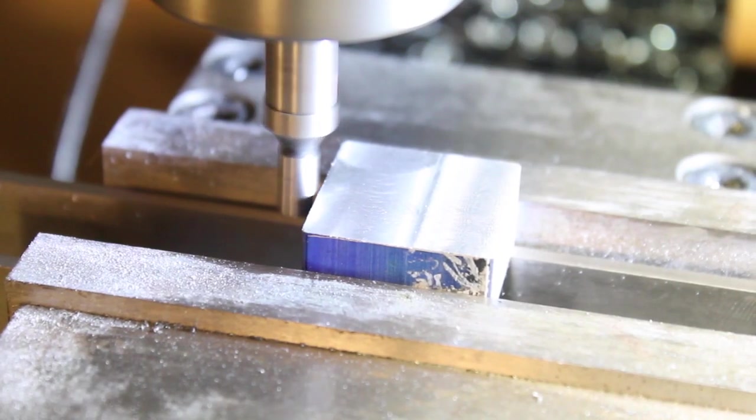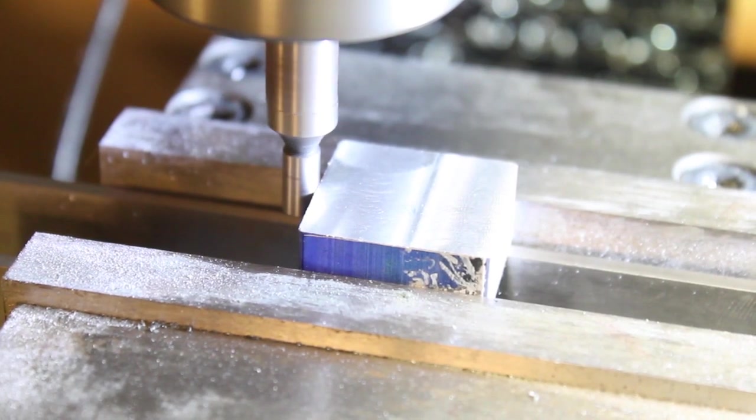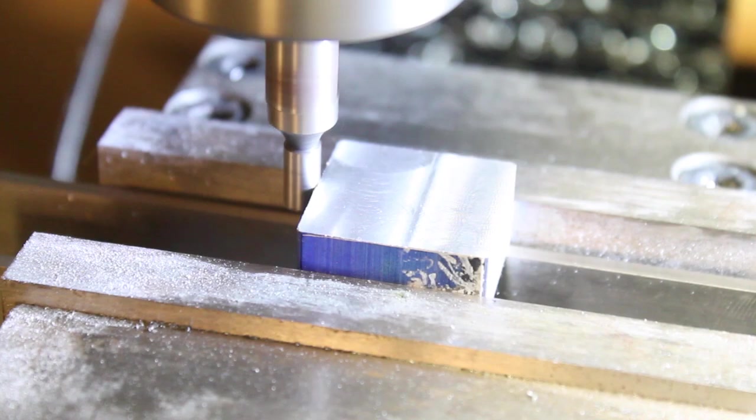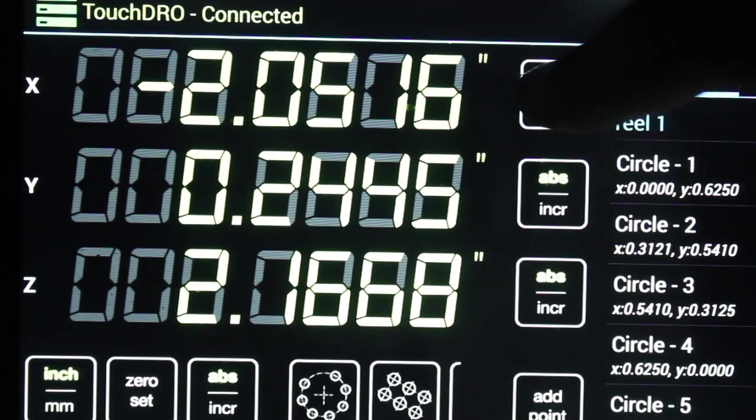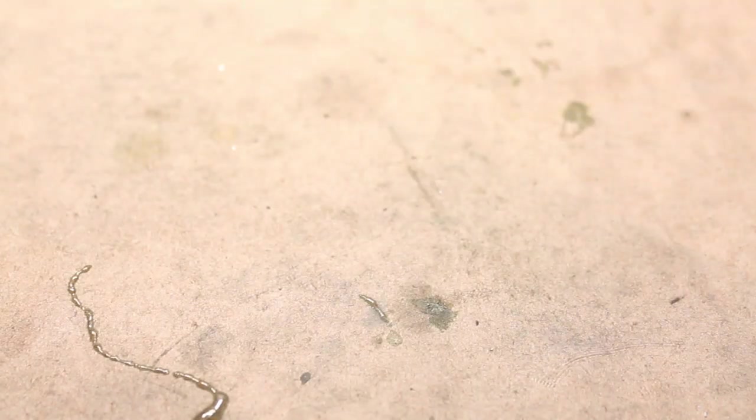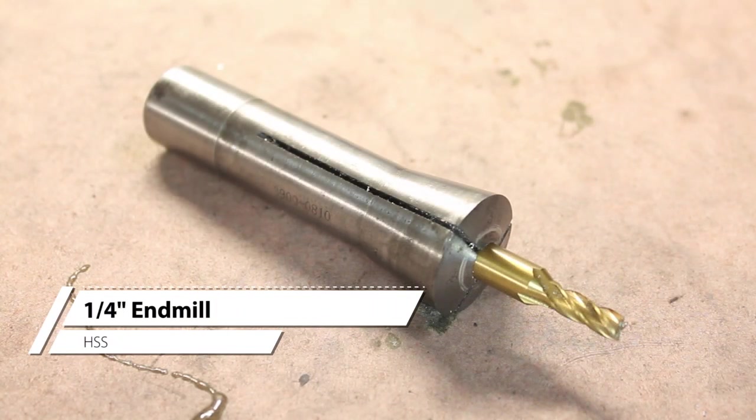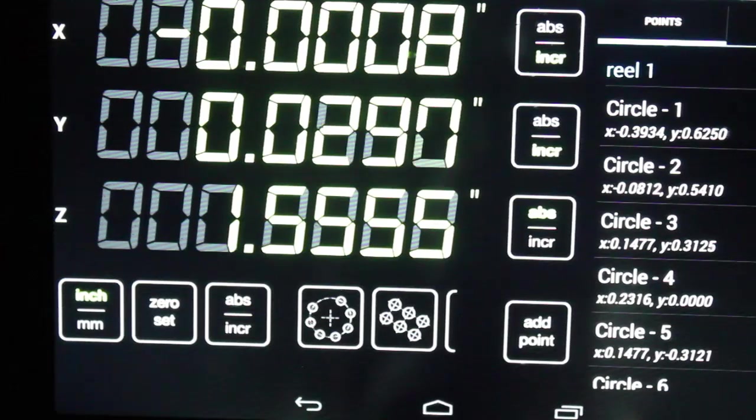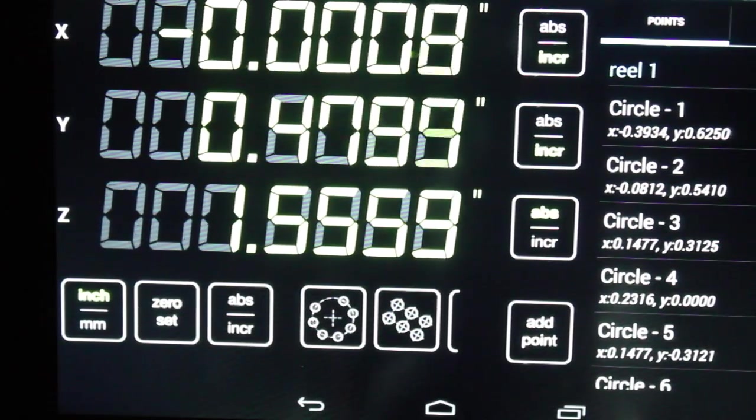The first feature will be a quarter inch flat bottom hole in the center. The depth of this hole, along with the length of the center shaft, is what determines the length of the guide. The DRO really helps to find the center of this part quick.